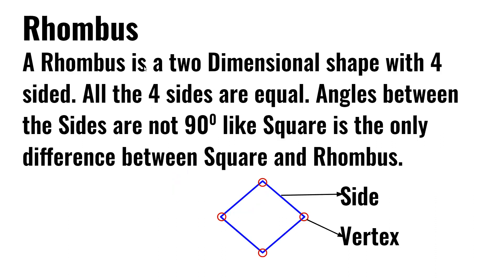A rhombus is a two-dimensional shape with four sides. All the four sides are equal. Angles between the sides are not 90 degrees like squares, and that is the only difference between squares and rhombuses.